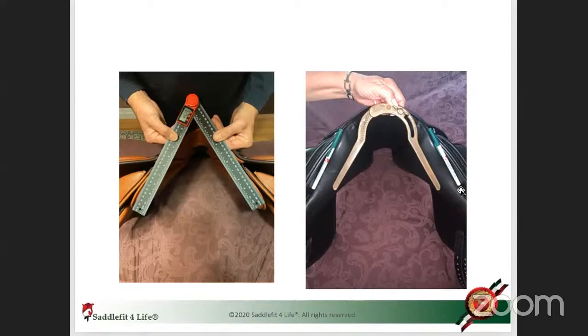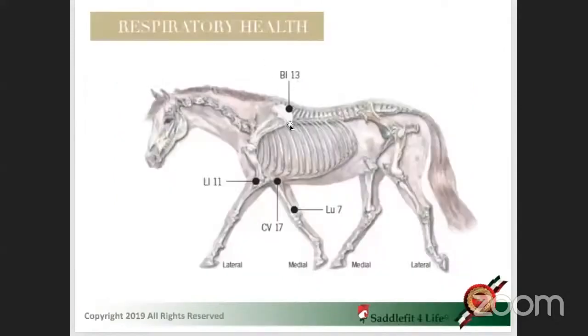Again, because you can pad up, you can use multiple horses on that saddle. Definitely, the single one is the metal plate, because that metal plate allows the shoulder freedom. That metal plate sits right behind the shoulder blade and BL13, respiratory health.